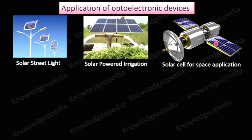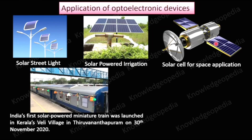One of the most interesting applications of solar cells is in vehicles. The government is insisting on using electric vehicles instead of those running on petrol or diesel, as fossil fuels are running out and causing pollution. We are slowly switching to e-vehicles, and one energy source for those vehicles is solar cells. Recently, Indian scientists developed a miniature solar-powered train, launched on 30th November 2020 in the village of Veli in Thiruvananthapuram, Kerala.